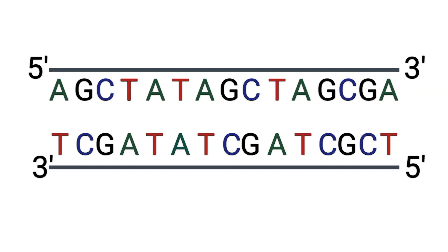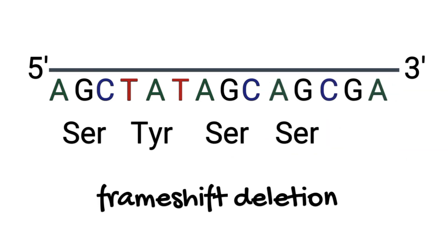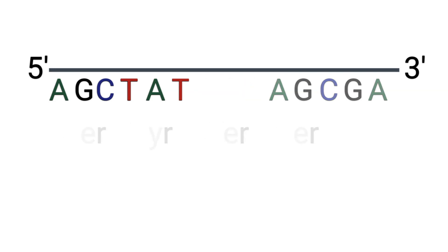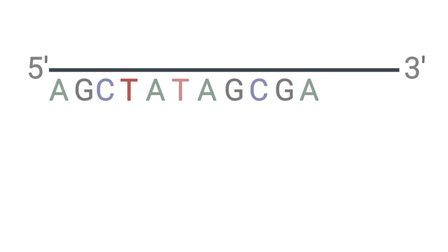Single gene genetic disorders can also arise from deletion mutations, wherein one or more nucleotides disappear from the gene. When one or two bases are deleted, this results in a frameshift deletion mutation, while when three bases are deleted, it could result in a non-frameshift deletion mutation. Just like in insertion mutations, a frameshift deletion mutation would result in a drastically different protein because every single amino acid after the point of deletion would be different.